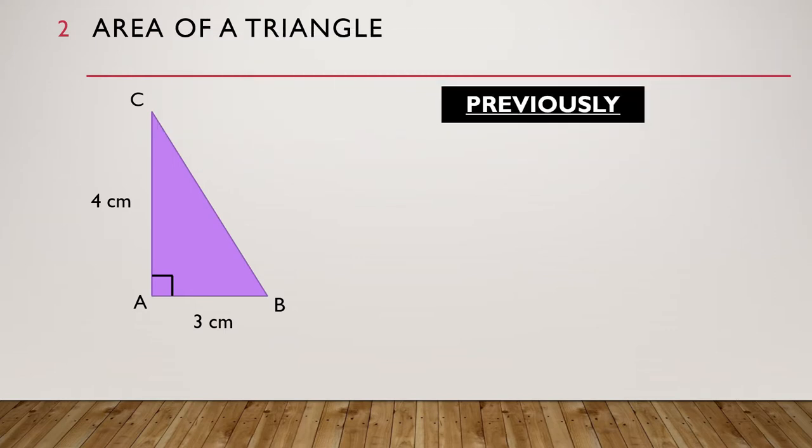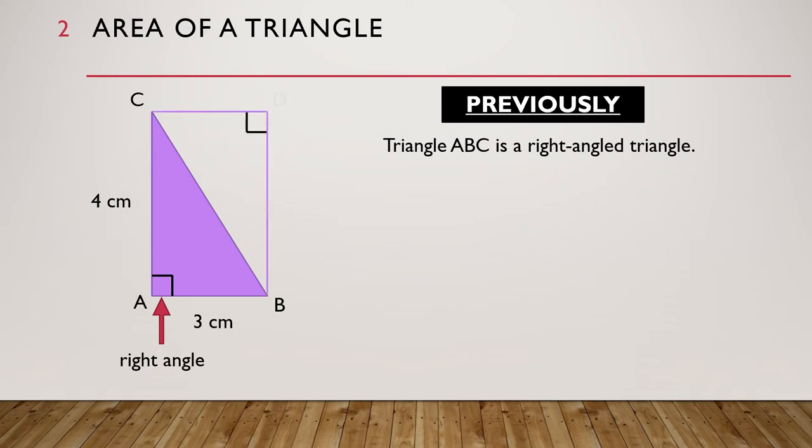Previously, on area of a triangle, we had triangle ABC, which is a right-angled triangle. We drew the related rectangle of the triangle. We found that the area of triangle ABC is half of the area of its related rectangle, ABDC.